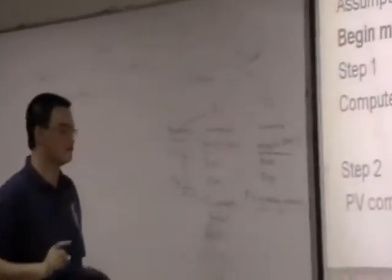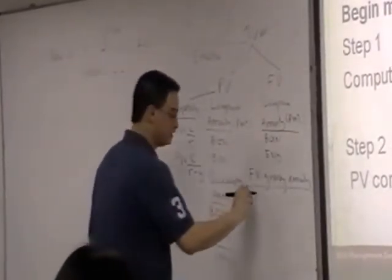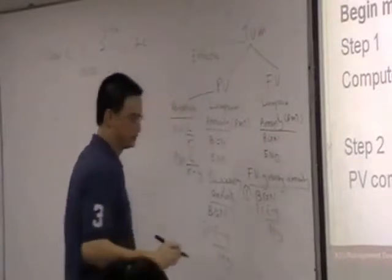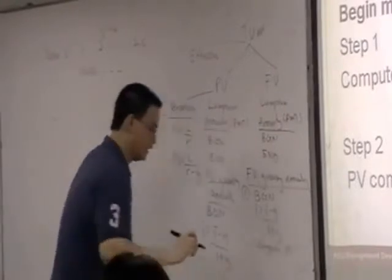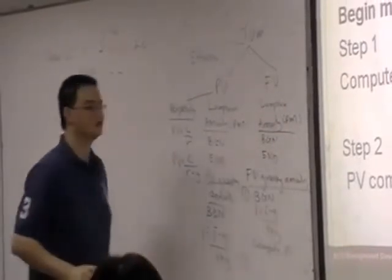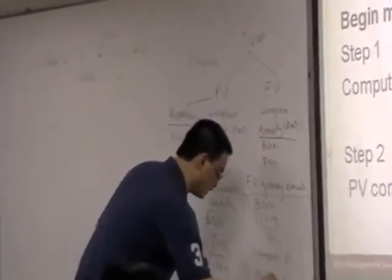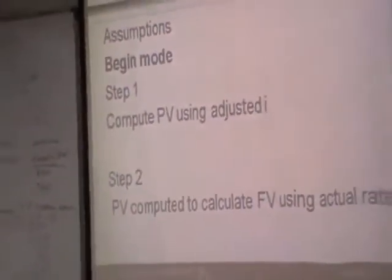For example, for future value annuity, there are two steps. Listen, I can't believe - there are two steps. First, you need to set begin mode. Then you have to do what we call adjusted part. Then you compute present value. Second step, once you compute present value, then you find the future value. Now take note, I'll show you what it means. Mark this slide. When you go back, these are the few important slides - future value growing annuity.